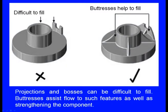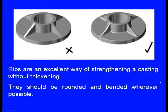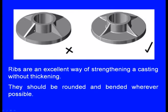Projections and bosses can be difficult to fill; buttresses assist flow to such features as well as strengthening the component. Buttresses are not in the original customer design, but the foundry man must modify the design to incorporate them. Ribs are an excellent way of strengthening a casting without thickening. They should be rounded and blended wherever possible. Ribs in the original customer drawing may be too sharp; they should be bent and rounded for a better design.